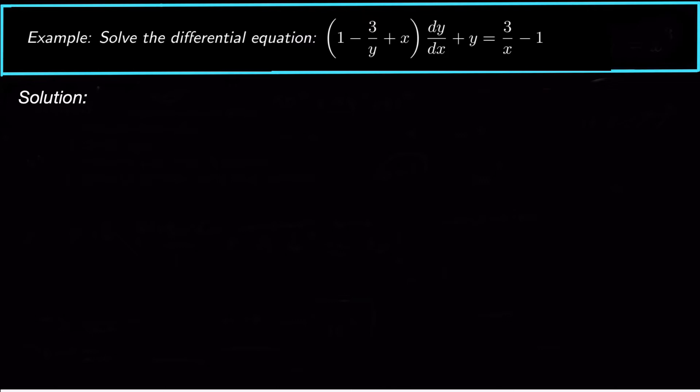The differential equation is 1 minus 3 over y plus x times dy/dx plus y equals 3 over x minus 1. Now sometimes they aren't already in the form m dx plus n dy.